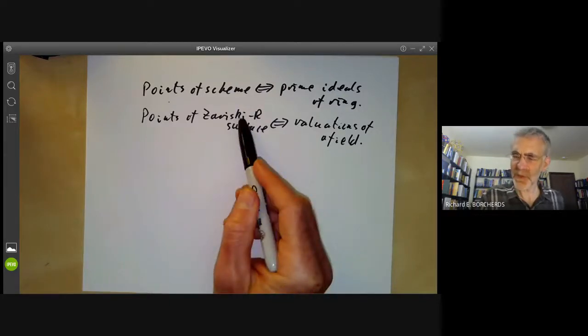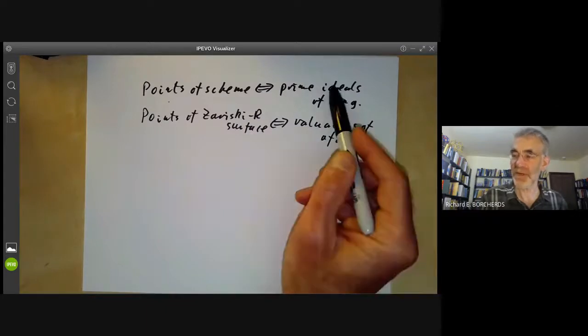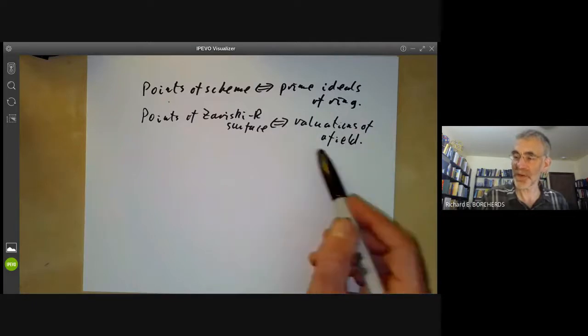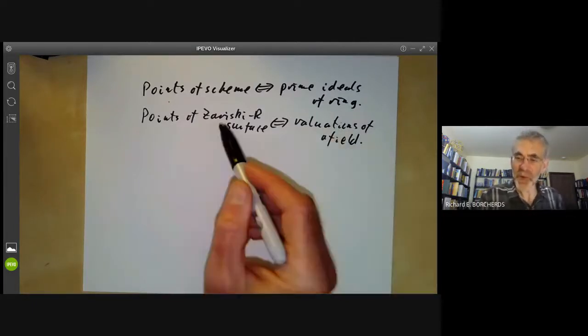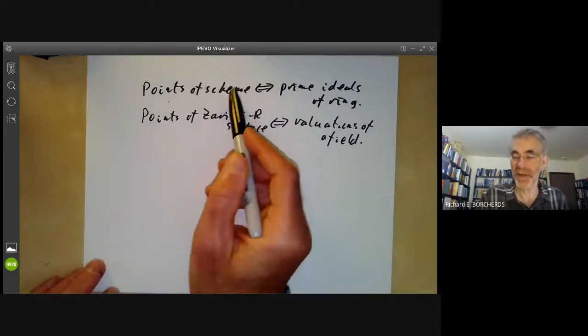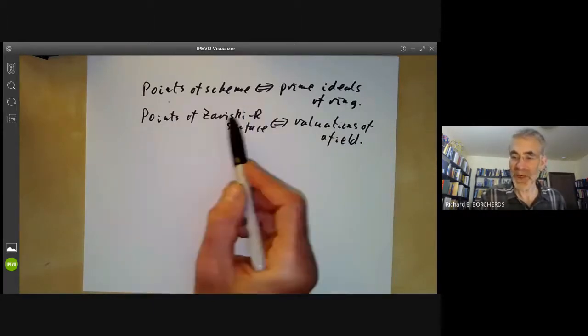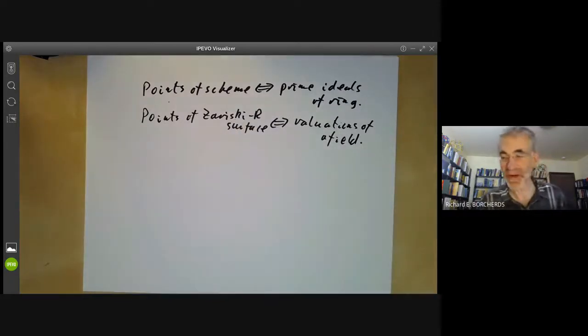There are two problems with Zariski Riemann surfaces. First of all, they're a bit too special. You see, schemes work for any rings, so you can do it over the integers, whereas Zariski Riemann surfaces only work if you've got a field. So it only works for integral domains. The other problem is schemes are locally quite nice. Schemes are locally affine schemes, and you know what an affine scheme looks like. What a Zariski Riemann surface looks like locally is not really very clear. As I said, you've got all these weird infinite constructions going on.